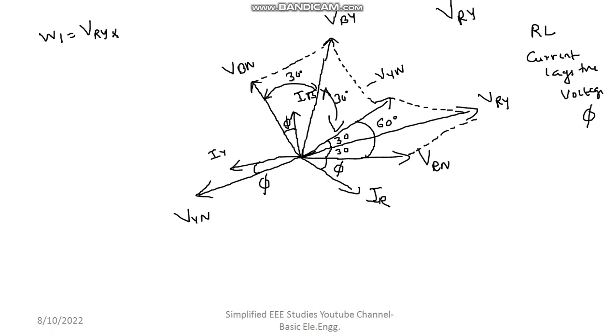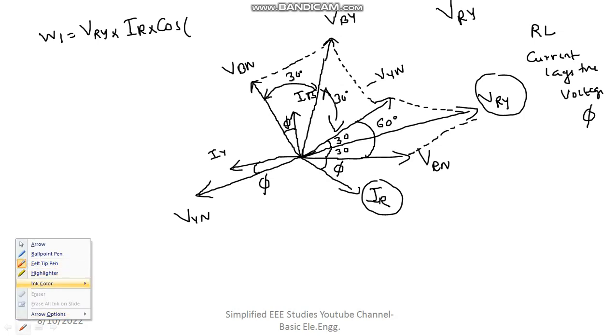So VRY is the line voltage. IR is the line current. VRY into cosφ. Cos I know, angle between VRY and IR. What is the angle between VRY and IR? I will show you once. Very carefully observe it. See, the angle between VRY and IR. So what is the angle called? This will be 30 plus φ.